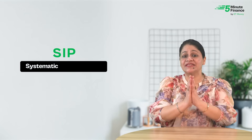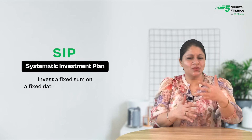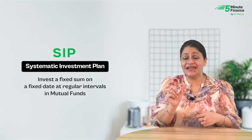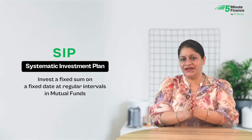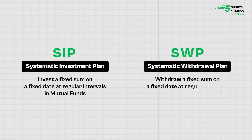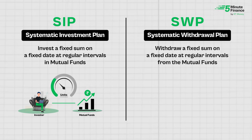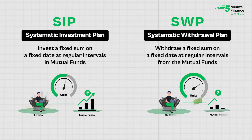Simply put, SWP is the opposite of SIP — Systematic Investment Plan. In SIP, you invest a fixed sum on a fixed date at regular intervals in mutual funds. In SWP, you withdraw a fixed sum on a fixed date at regular intervals from mutual funds. When you invest through SIP, units are credited to your account; when you do SWP, units are deducted from your mutual fund account.